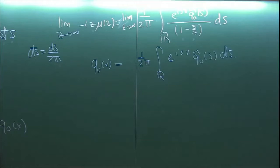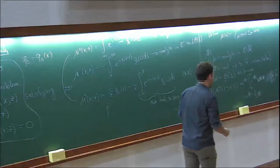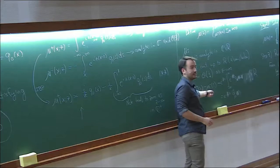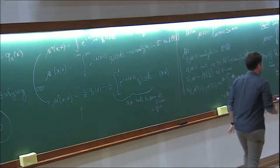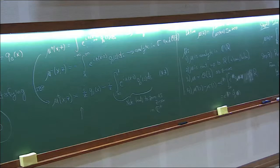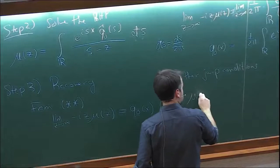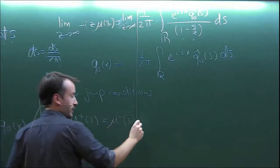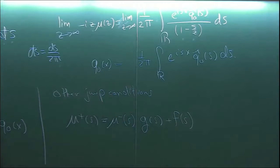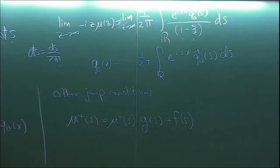This is a very simple Riemann-Hilbert problem — an additive jump. But one could equally look for a multiplicative jump condition: mu plus equals G · mu minus plus something. Those arise in practice as well — I still have a right-hand side but now a coefficient G. Moreover, there's no reason mu needs to be a scalar. This could be a matrix Riemann-Hilbert problem with matrix G and matrix mu. We'll encounter that.